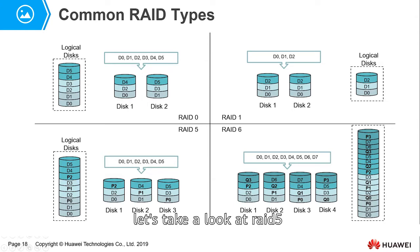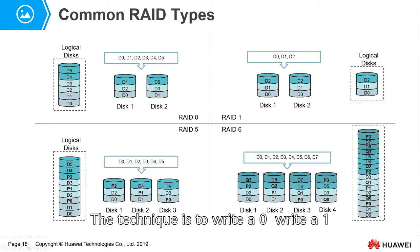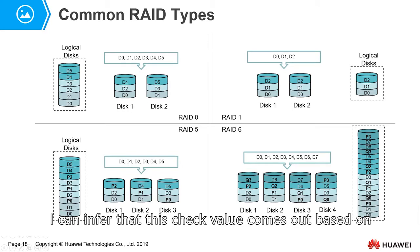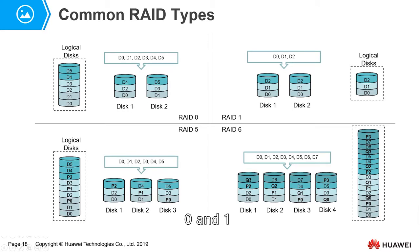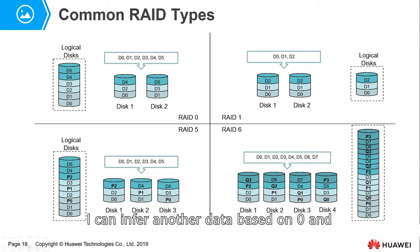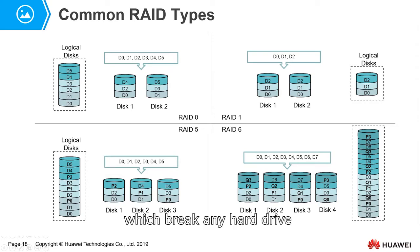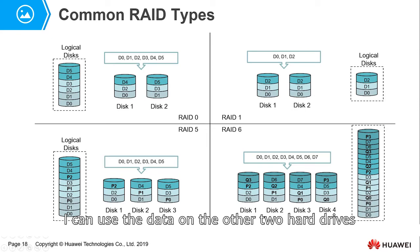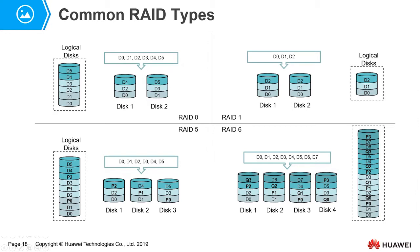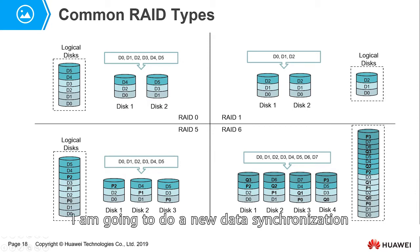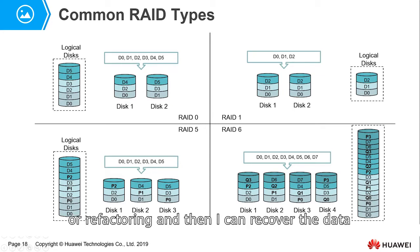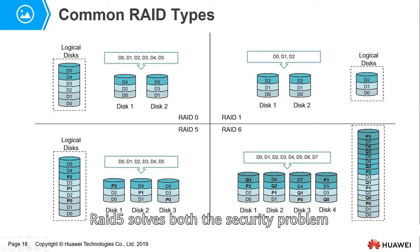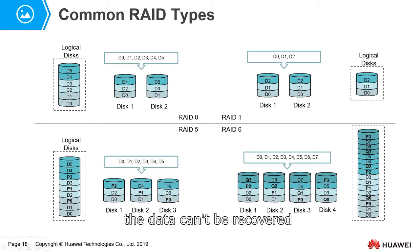Next, let's take a look at RAID 5. RAID 5 adds a technique called parity. The technique writes data 0, data 1, and then a checksum value. You can derive the checksum from 0 and 1, and you can also derive either data value from the other data and the checksum. With three hard drives, if any one hard drive breaks, you can use the data on the other two hard drives to recover the broken drive's data through reconstruction. RAID 5 solves both the security problem and the read/write performance problem. However, if two hard drives in RAID 5 break, the data cannot be recovered.